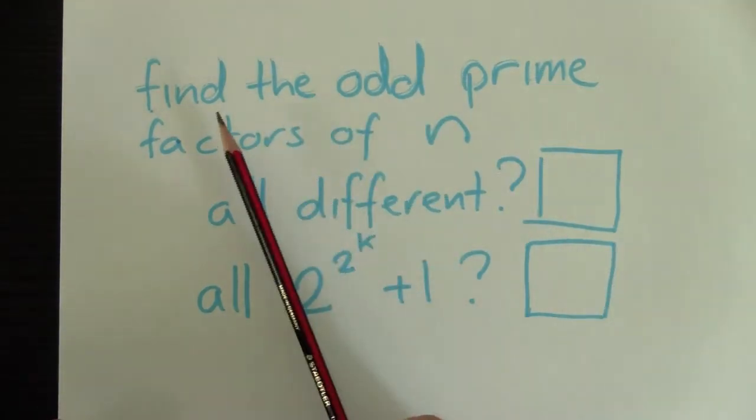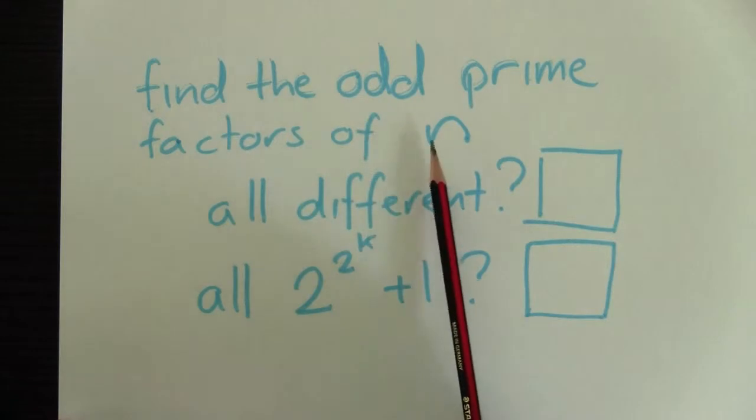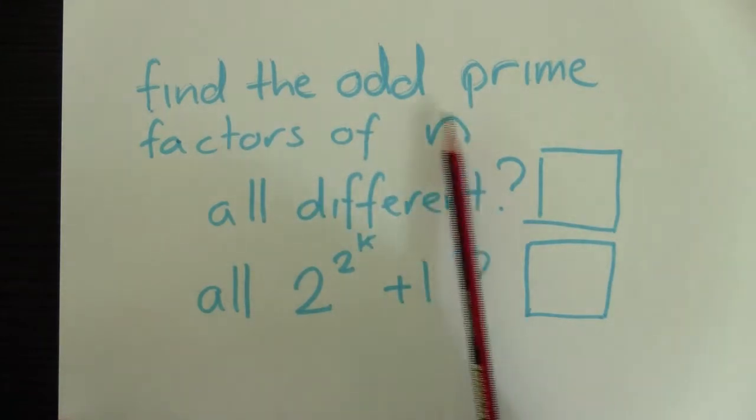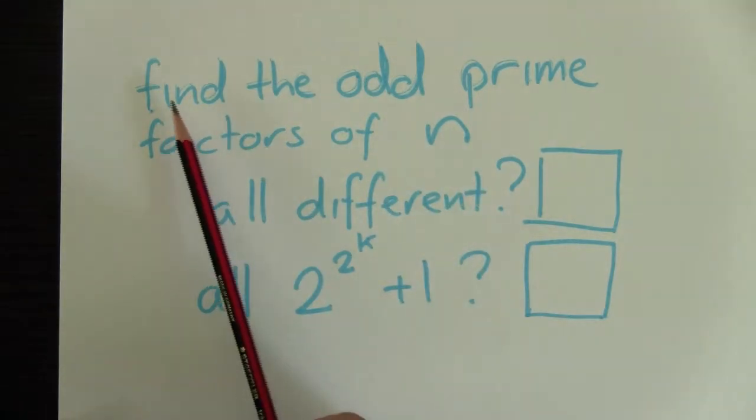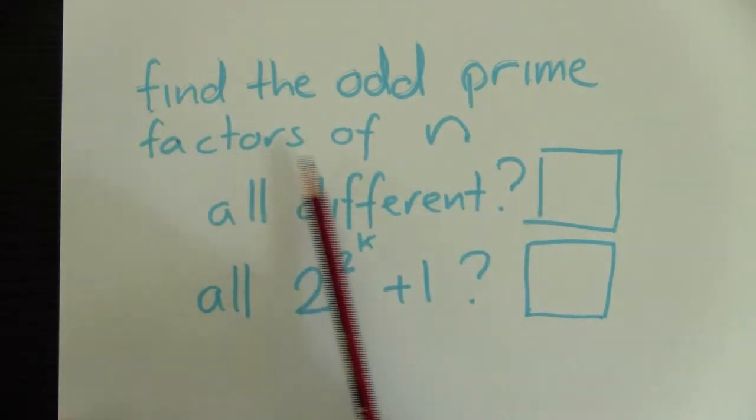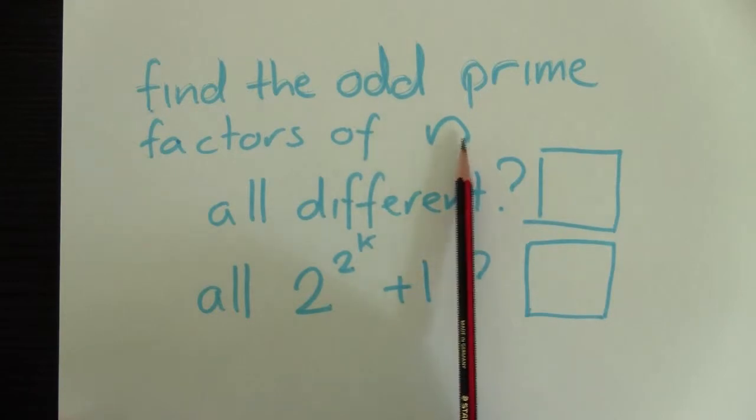Here we want to make an equilateral triangle. n here is three. It's got three sides. n is the number of sides of the shape you want to make. So we'll find all the odd prime factors of n. For three, that's easy. There's just three.